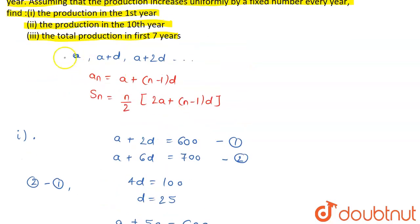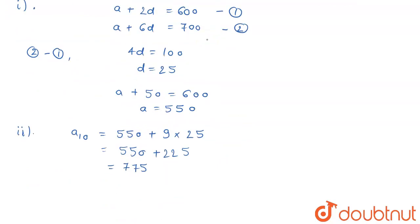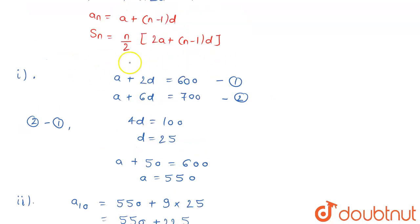Now, the last part is the total production in the first seven years. For that we are going to use the formula of the AP for the summation, this formula for the first seven years.